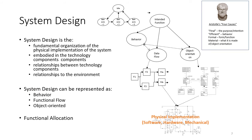Taking a step back to ask: what is a design? It is the fundamental organization of the physical implementation of the system — how the system is going to be built. It is embodied in the technology components and establishes the relationship between those components. Previously, the architecture was a technology-agnostic description of the system. Now we answer: how will the system actually be implemented? What are the physical components? The intended function flows down to behavior, data flow, and object orientation, which are all architectural descriptions.